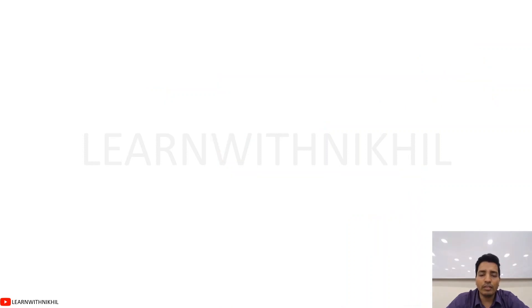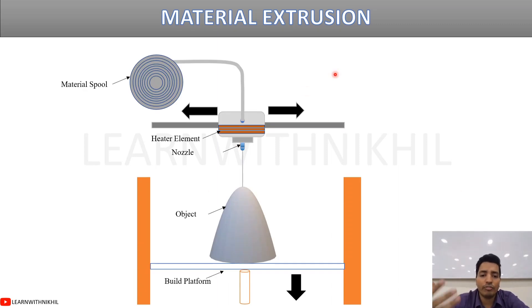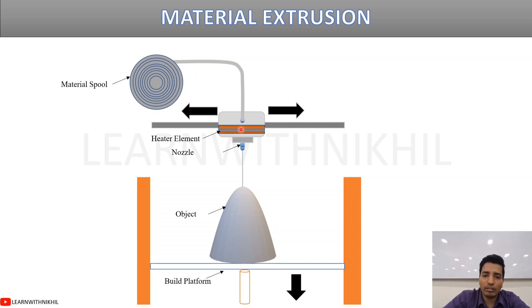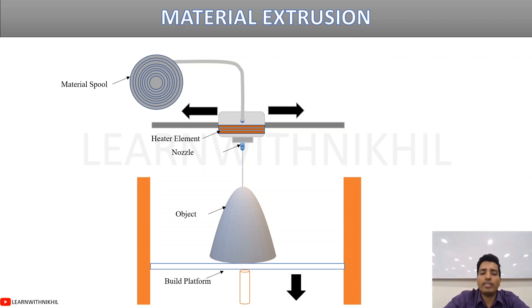Next is material extrusion, which is the most common basic 3D printer. It uses a filament spool; the filament thread is fed into a nozzle with a heating element. For PLA material, the nozzle temperature is around 200°C, which melts the filament. The melted material is deposited layer by layer on the build platform, which moves up and down while the nozzle moves horizontally to create the full object.